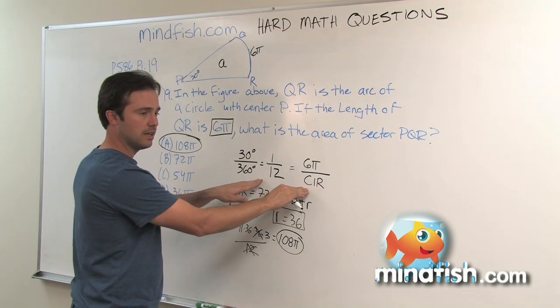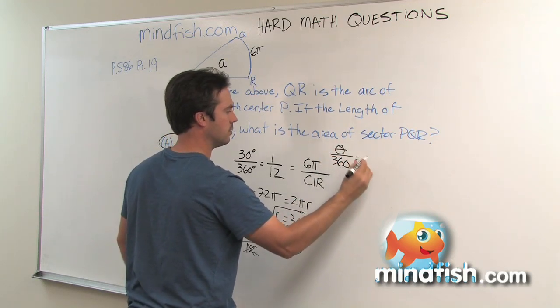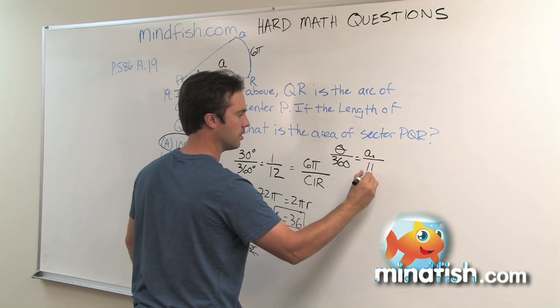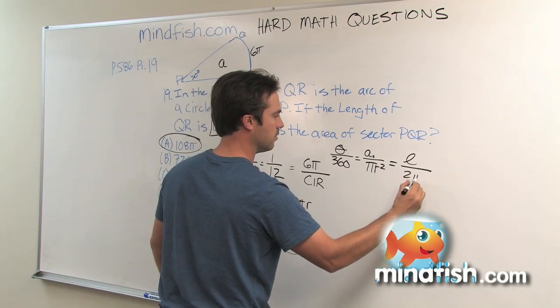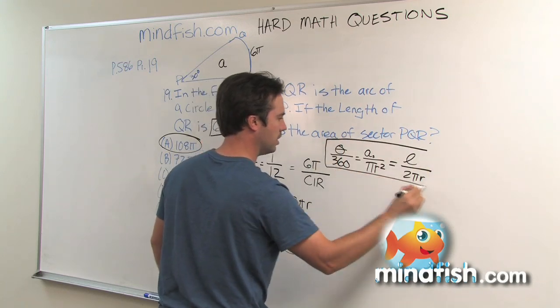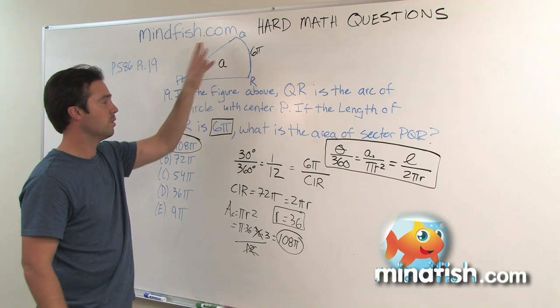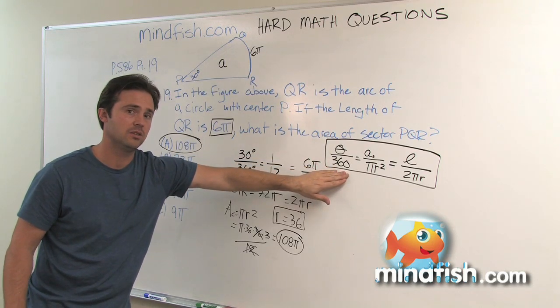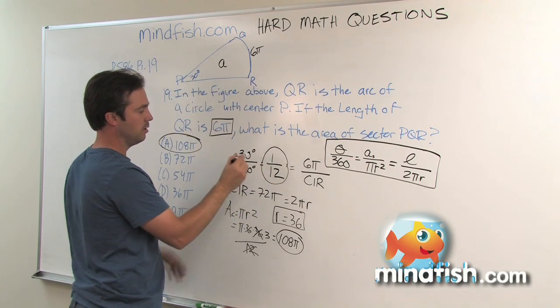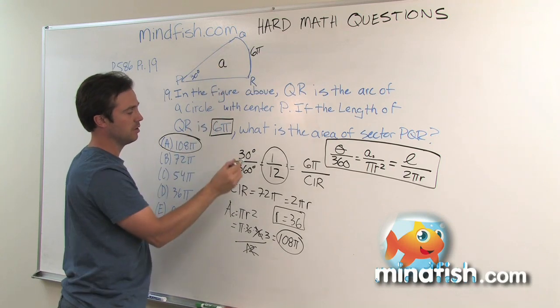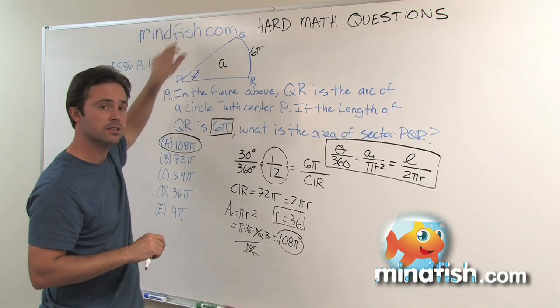The equation that I essentially used when I did this was that the angle over 360 is equal to the area of the sector over the area of the circle, which is πr², which is also equal to the arc length of the sector divided by 2πr. That's kind of the equation that will allow you to move from any one piece, whether they give you area of a sector or arc length of the sector or the area of the circle. The idea is that you're trying to make sure that the piece is proportional to the whole. So 30 is to 360 as the arc length is to the entire arc length.